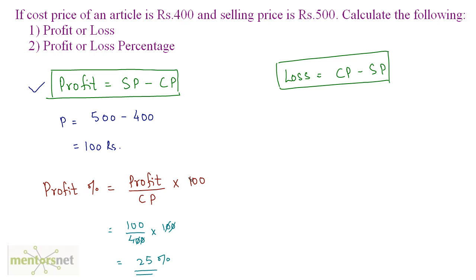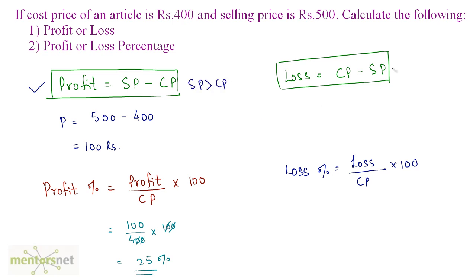The formula for loss percent is the same as the formula for profit percent, but using loss instead of profit. If the selling price is greater than the cost price, there is a profit (SP > CP). If the selling price is less than the cost price, there is a loss. You always calculate profit percentage, loss percentage, profit, or loss on the cost price and not on the selling price.